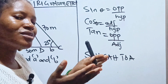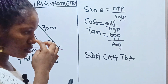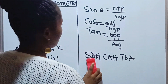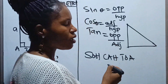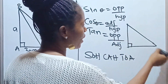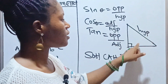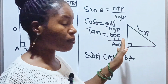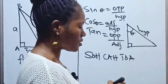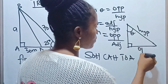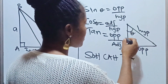Now, which side of the triangle is the opposite, the hypotenuse, and the adjacent? In a right-angle triangle, the longest side is always your hypotenuse — it's the side facing your right angle. The side facing your reference angle is your opposite, and the remaining side is your adjacent.